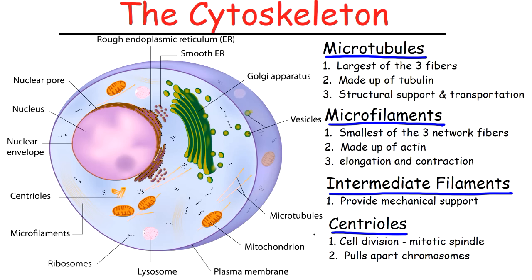Next up, we have the centrioles. The centrioles are active during cell division, and during that time they form something known as the mitotic spindle, which consists of microtubules. What it does during cell division is pull apart the chromosomes, thus allowing the cell to be split into two. The chromosomes are basically a condensed version of chromatin, and they form during cell division.